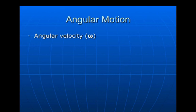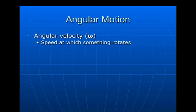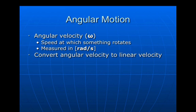Just like in linear motion we dealt with linear velocity, in circular motion we deal with angular velocity. The symbol for angular velocity is the lowercase Greek letter omega — not a W, but omega. Angular velocity has to do with the speed at which something rotates or spins. The unit of omega is radians per second. We often hear things in RPMs — revolutions per minute — but much like with displacement, we can convert angular values into linear values. To get linear velocity, you need radius times angular velocity. The radius is clearly very important for converting angular terms into linear terms.